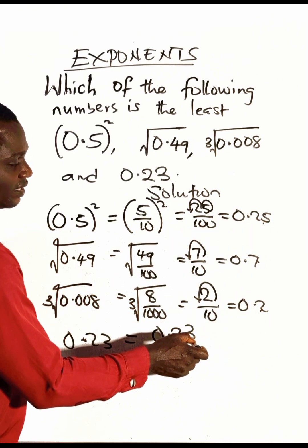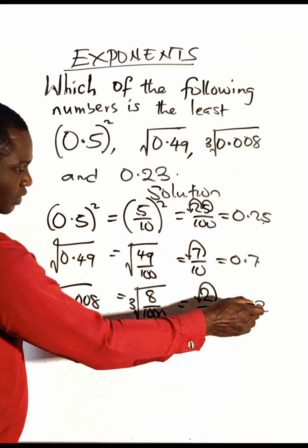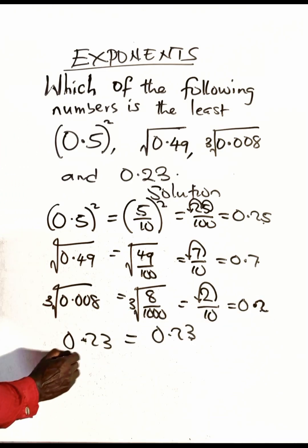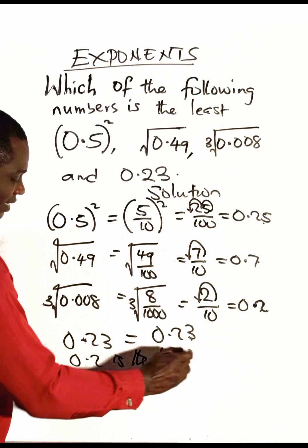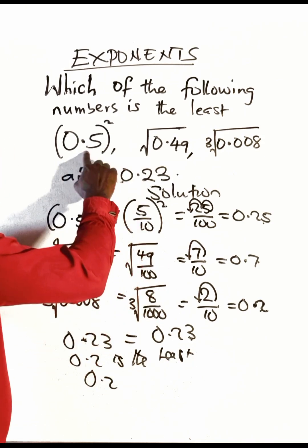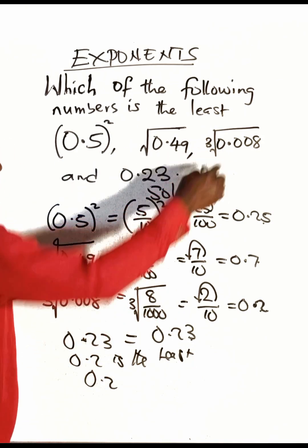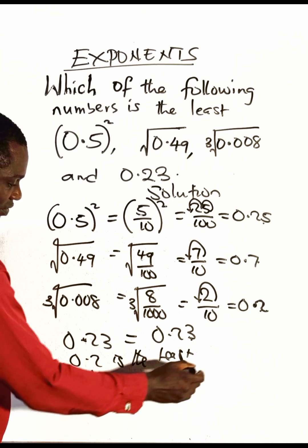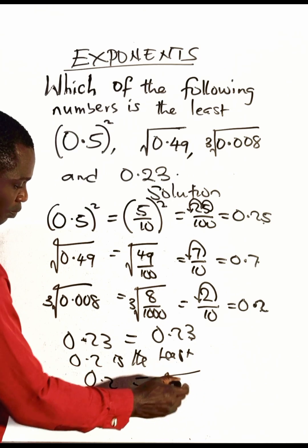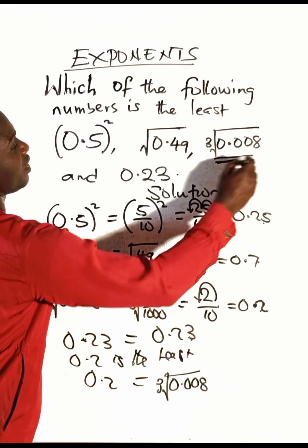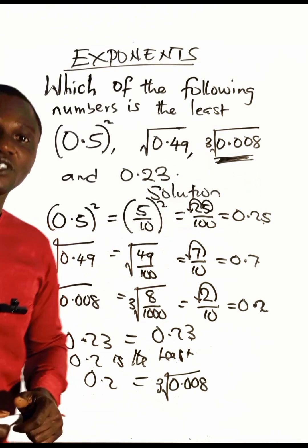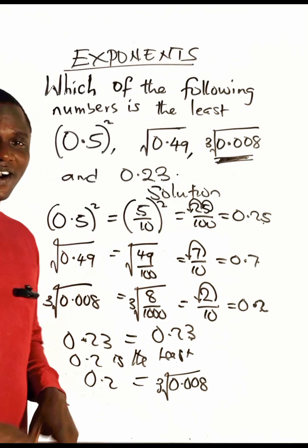And 0.2 from the original values is the cube root of 0.008. This is the smallest number here. It is the least. Thanks for watching, see you in the next video. Bye.